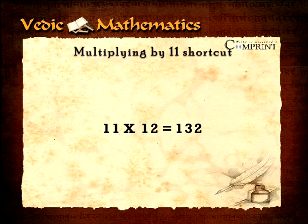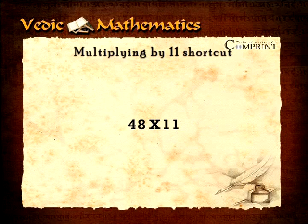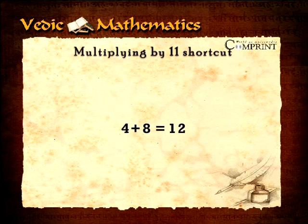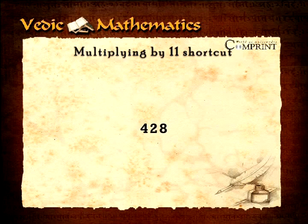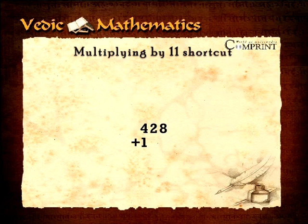Let's try another: forty-eight multiplied by eleven. Leave the eleven alone for a moment and work with forty-eight. Four plus eight equals twelve. Now we have to put the twelve in between the four and eight — but don't place it as 4-1-2-8, as that is wrong. Instead, place the two from twelve in between the four and eight giving 428. Then add the one from twelve to the four of 428, giving 528.